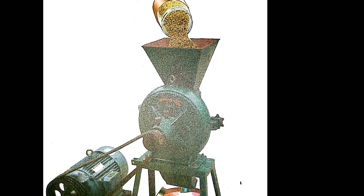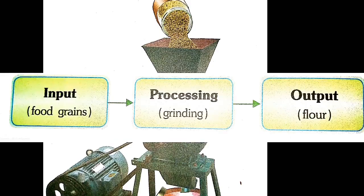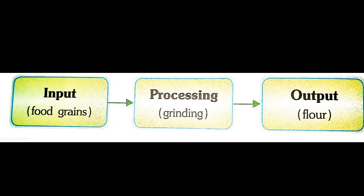A floor mill is the best example for understanding computer functions. In a floor mill, food grains are put into a big funnel at the top and they are slowly crushed in a grinder. The flour comes out of the opening at the bottom. In this procedure, food grains put into the funnel is input, the grinding of food grains into flour is processing, and the flour which comes out is output.